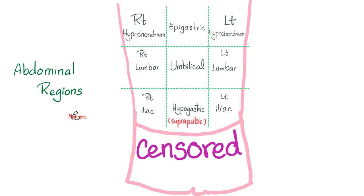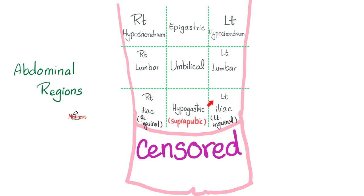What kind of tubercle is this? This is the right tubercle of the right iliac crest, and this is the left tubercle of the left iliac crest. By the way, we can call this right iliac or right inguinal — same thing here — left iliac or left inguinal region.